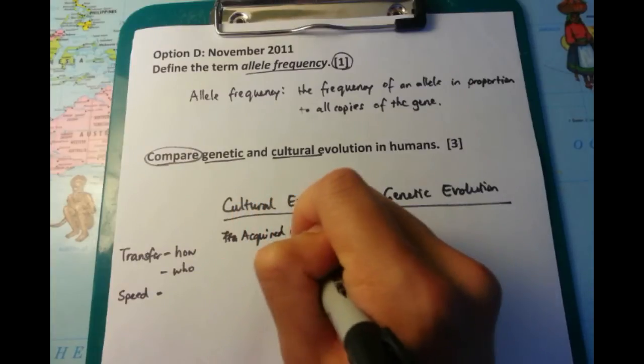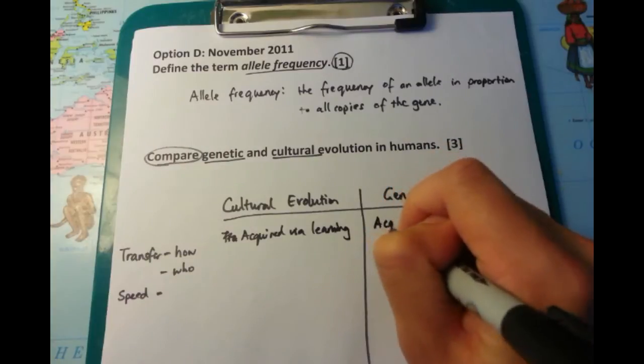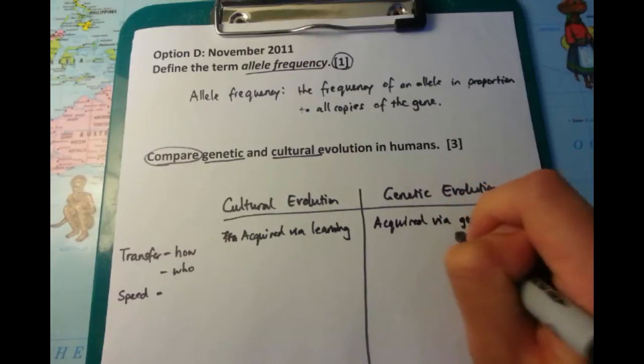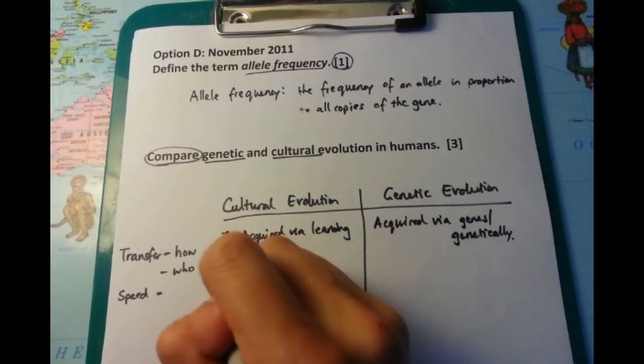Before we get ahead of ourselves, let's talk about how it's transferred. Cultural evolution is acquired via learning, acquired from the environment, whereas genetic evolution obviously comes from genes and is genetically inherited.